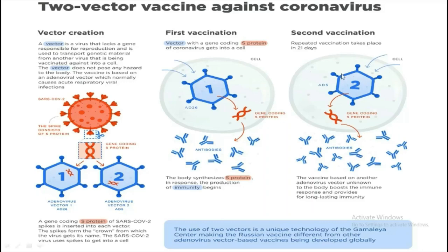After 21 days, the second vaccination is given using Ad5. Ad5 also contains the S-protein gene, which also expresses S-protein, boosting our immune response and providing long-lasting immunity. The use of two different vectors is a unique technology of the Gamalaya Center, making the Russian vaccine different from other adenovirus vector-based vaccines being developed globally.